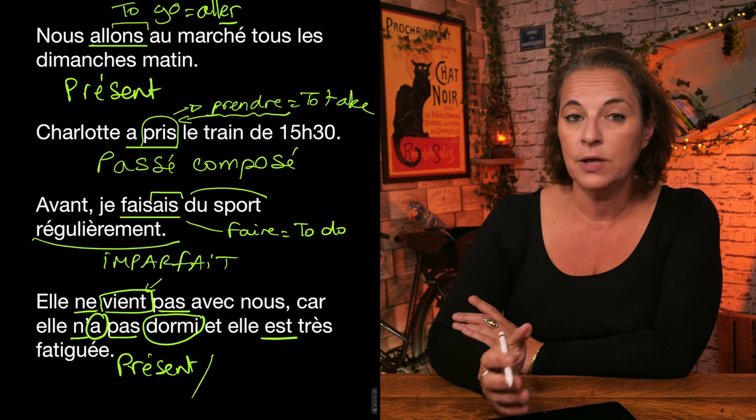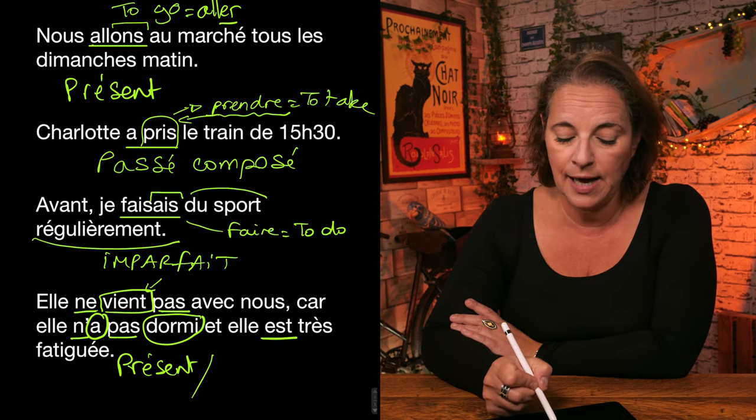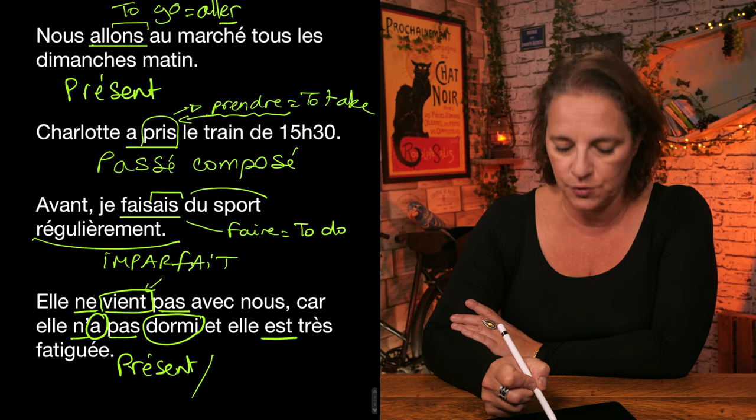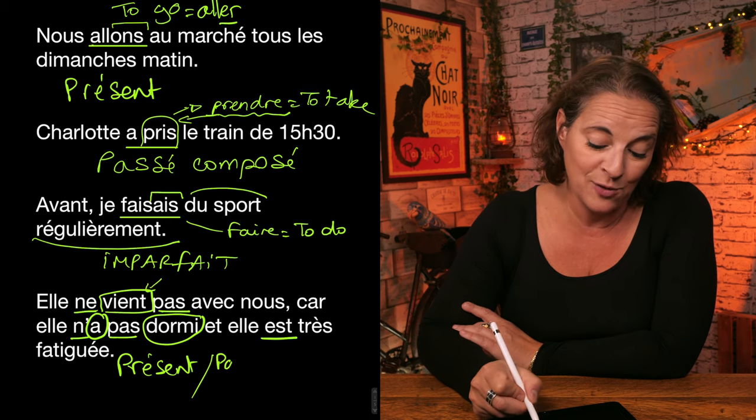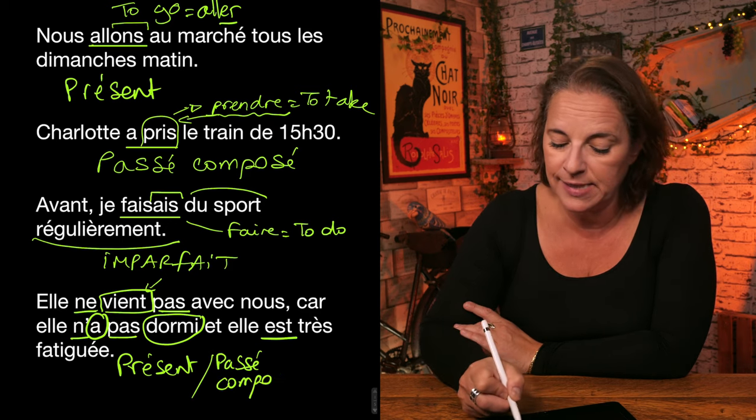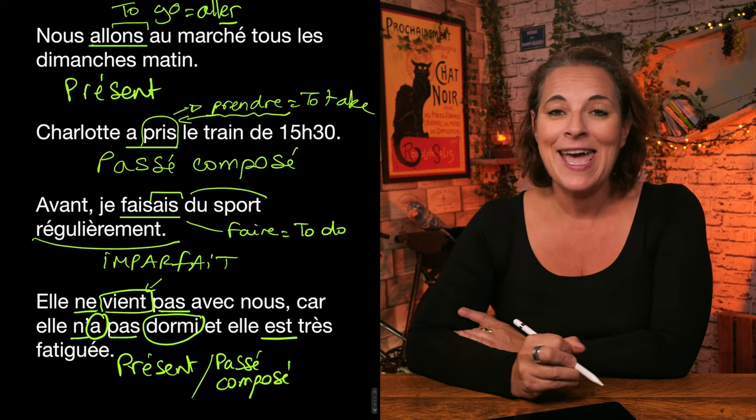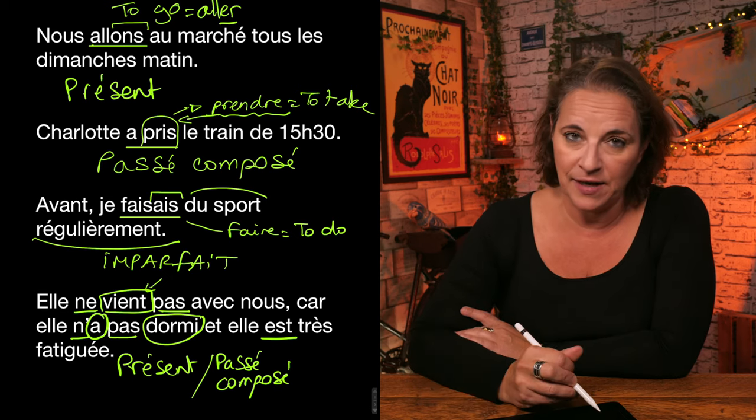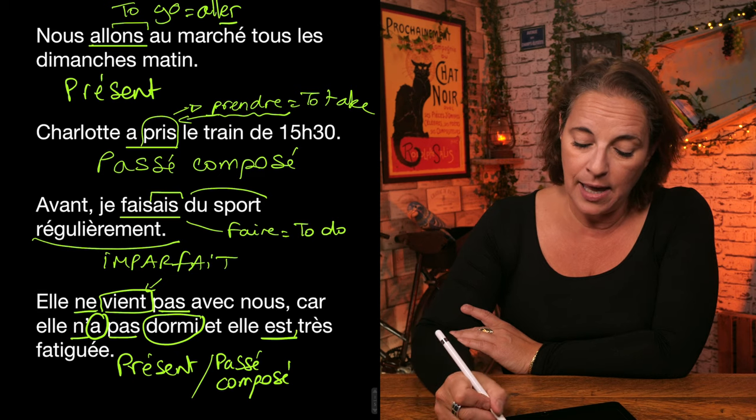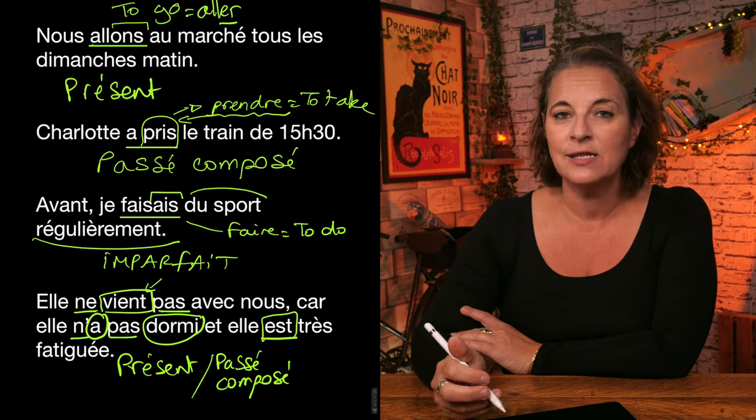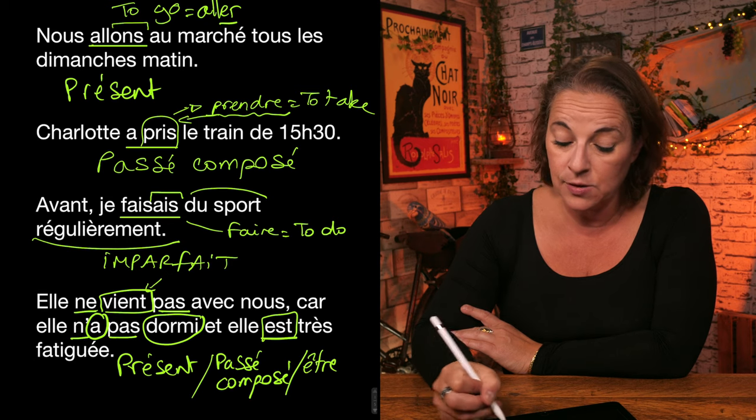So we know it's composed of two things. An auxiliary and a past participle of the verb dormir. So passé composé. Passé composé. You see that? Et elle est très fatiguée. So est is the present tense of to be. Être. So this is a présent.